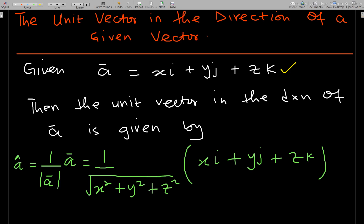One thing you should always know is that after you are done finding your unit vector, make sure the magnitude of your unit vector is always one. When it is one, your vector is a unit vector — as we mentioned in our introduction to vectors, the unit vector has a magnitude of one.